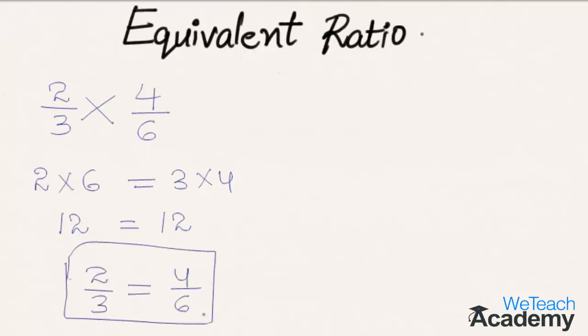We can also write equivalent ratios by just simplifying both the ratios. Coming to the ratio 2 by 3 which cannot be simplified, so we can write this as 2 by 3 itself. And coming to the next ratio that is 4 by 6 which can be simplified, 2 times 2 is 4 and 2 times 3 is 6. So we get here 2 by 3 as a result. So here the both the values of both the ratios are equal, so we can see that 2 by 3 is equivalent to 4 by 6.